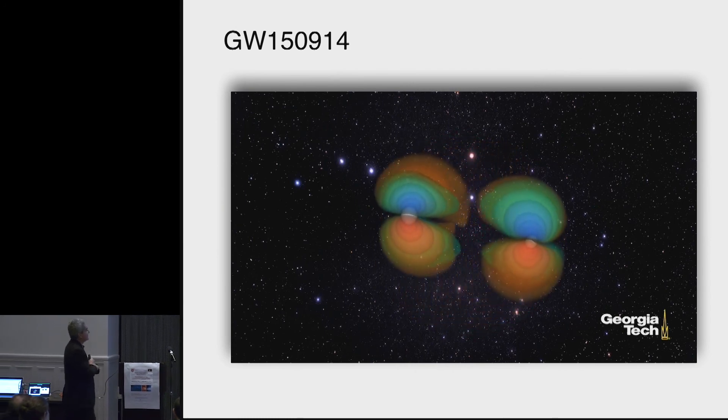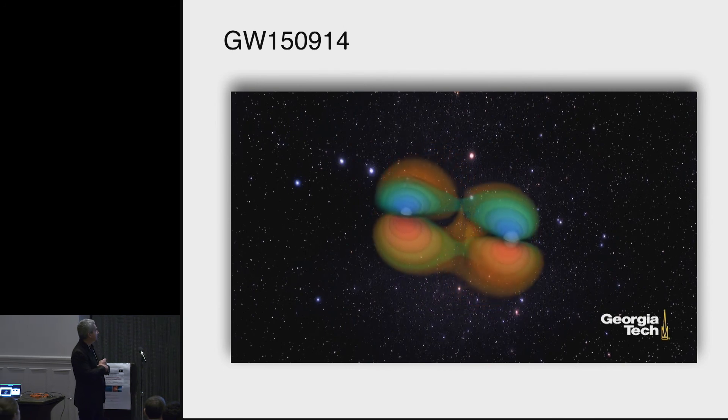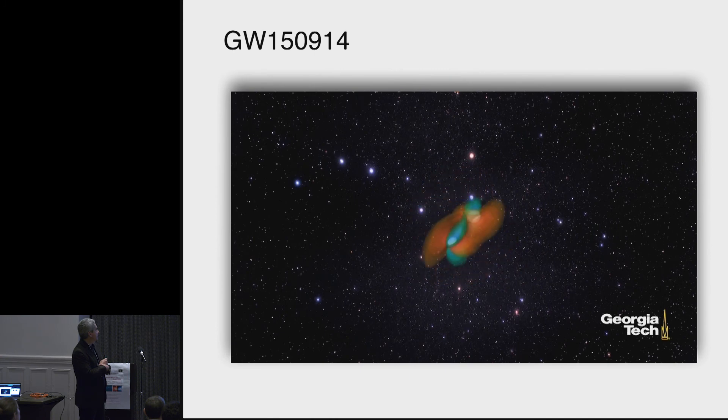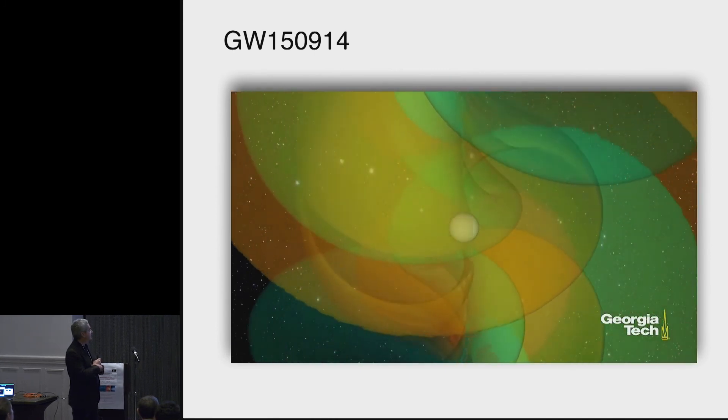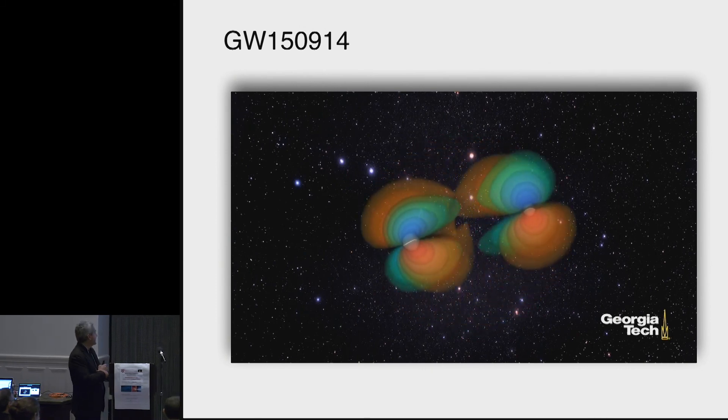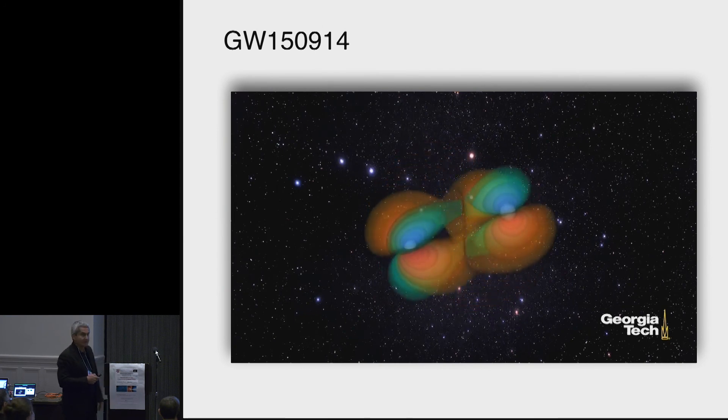So this is the two black holes. One of them is slightly larger than the other one. They are approaching and eventually you get to the point in which there is a common horizon. Notice it appears instantaneously. I'll go back and talk about that in a second. But so this is the current state of simulations in black hole mergers.